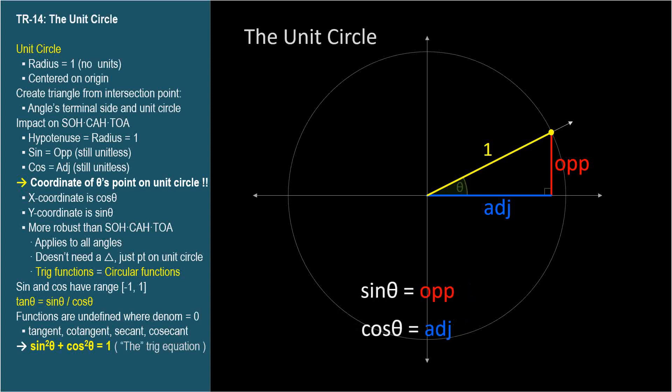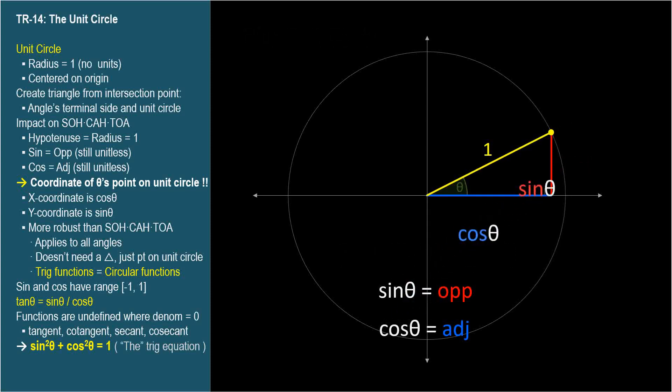the sine of theta corresponds to the length of the opposite side, and cosine theta corresponds to the length of the adjacent side. So, we can label our triangle like this, and this tells us that the x and y coordinates of theta's point on a unit circle are cosine theta and sine theta, respectively.